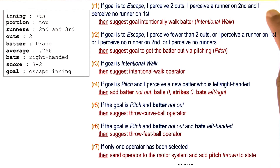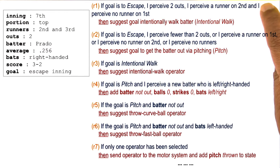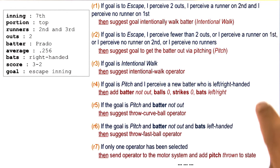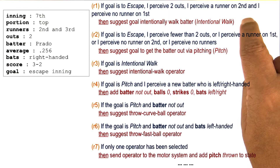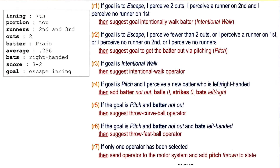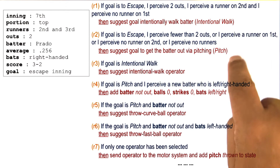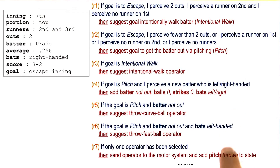Let us imagine that the procedural part of source long-term memory contains the following rules. The procedural knowledge in source long-term memory is represented in the form of rules. This is sometimes called production rules. In fact, the term production systems comes from the term production rules. So each rule here is a production rule.